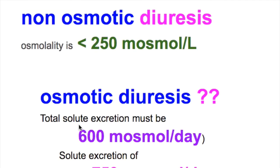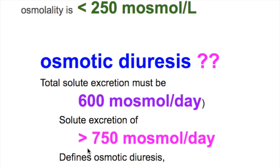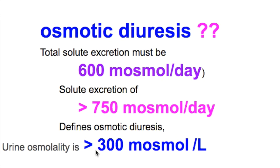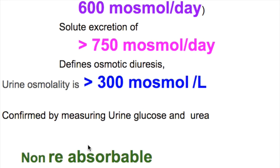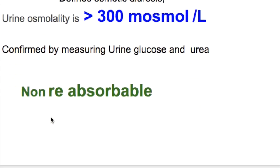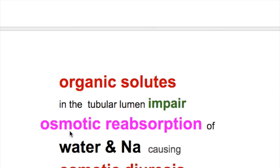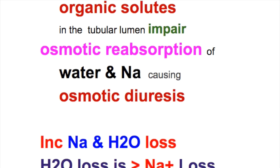In osmotic diuresis, the total solute excretion in a day should be 600 milliosmols. If solute excretion is more than 750 milliosmols a day, it defines osmotic diuresis, with urine osmolality more than 300 milliosmols per liter, confirmed by measuring urine glucose and urea. Non-reabsorbable organic solutes in the tubular lumen impair osmotic reabsorption of water and sodium, causing increased sodium and water loss, with water loss exceeding sodium loss.